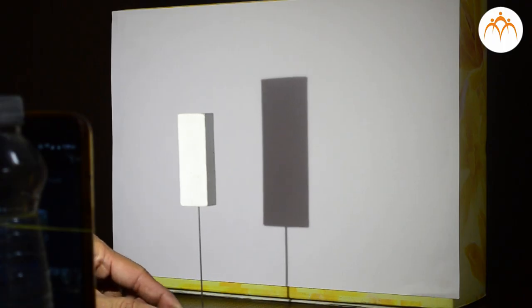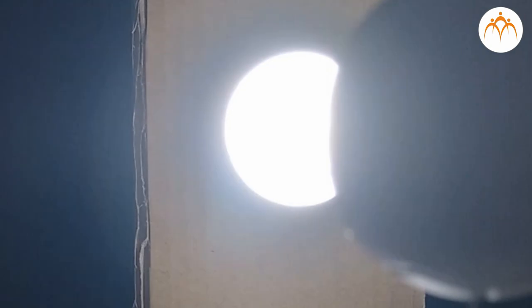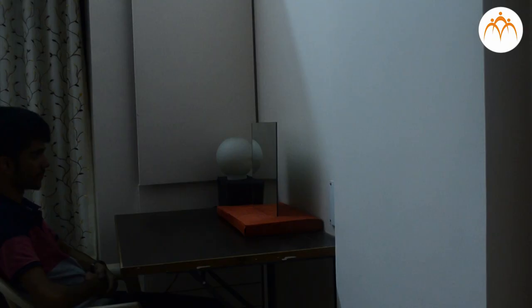We looked at the formation of shadows and understood how eclipse takes place. Imagine that you are in a pitch dark room. You are in front of the mirror. Can you see yourself in the mirror?